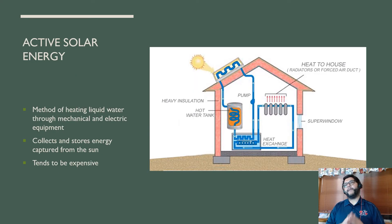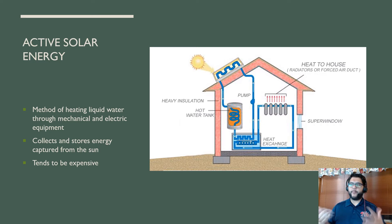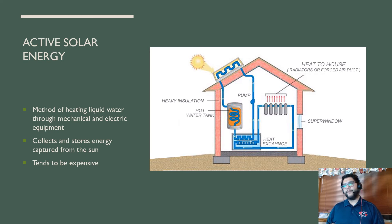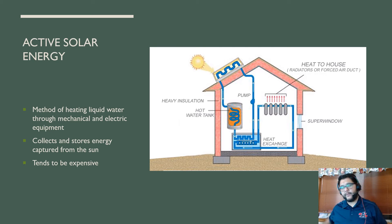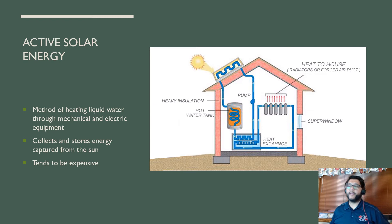Active solar is a way where you use energy to pump water toward the area of your house where sunlight is going to be the most. That water goes into a water tank that stores the warm water, and then using radiators in your house you can exchange the heat around. It's a pretty cool way of heating liquid through mechanical and electric equipment. You can collect and even store the energy, but it tends to be expensive.